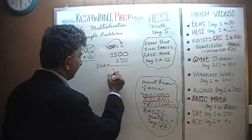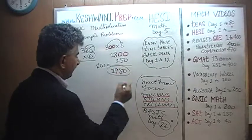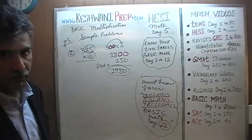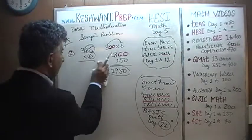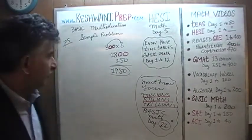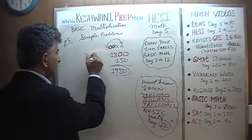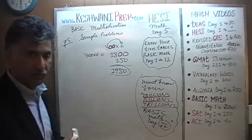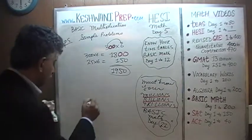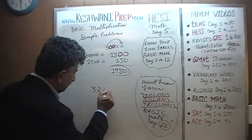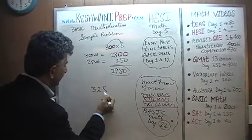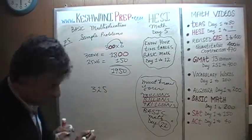That is the precise, exact answer — not an estimation at all. We were asked for 325 times 6: first we figured out 300 times 6, which is 1,800, and then 25 times 6, which is 150. Now let's do it out the traditional way just to confirm.